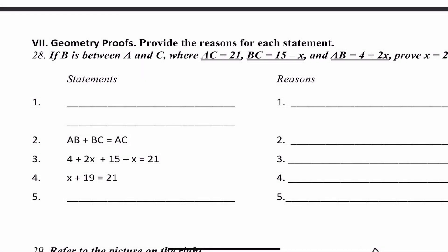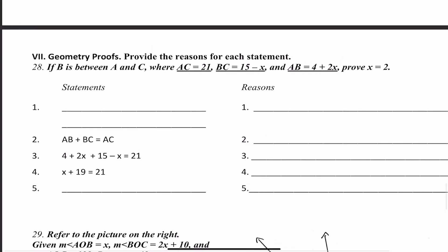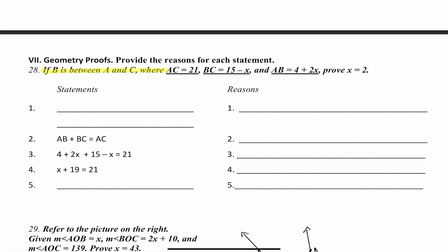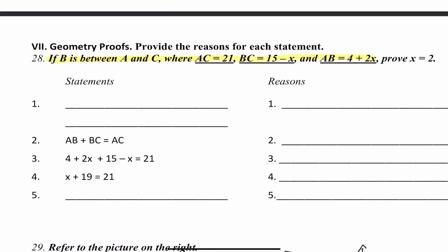If B is between A and C, where AC is equal to 21, BC is equal to 15 minus X, and AB is equal to 4 plus 2X, prove that X is equal to 2. So these are the givens: B is between A and C, AC equals 21, BC equals 15 minus X, and AB equals 4 plus 2X. That reason is given.